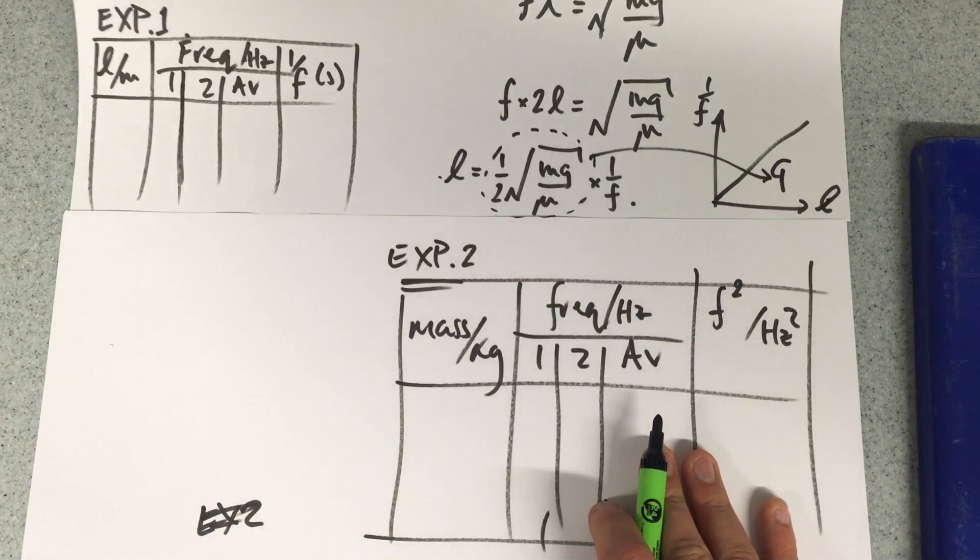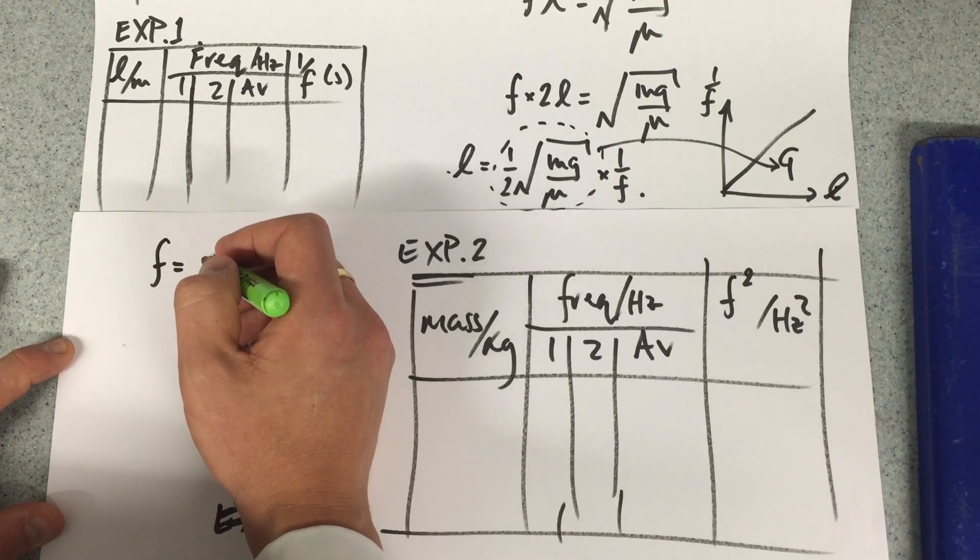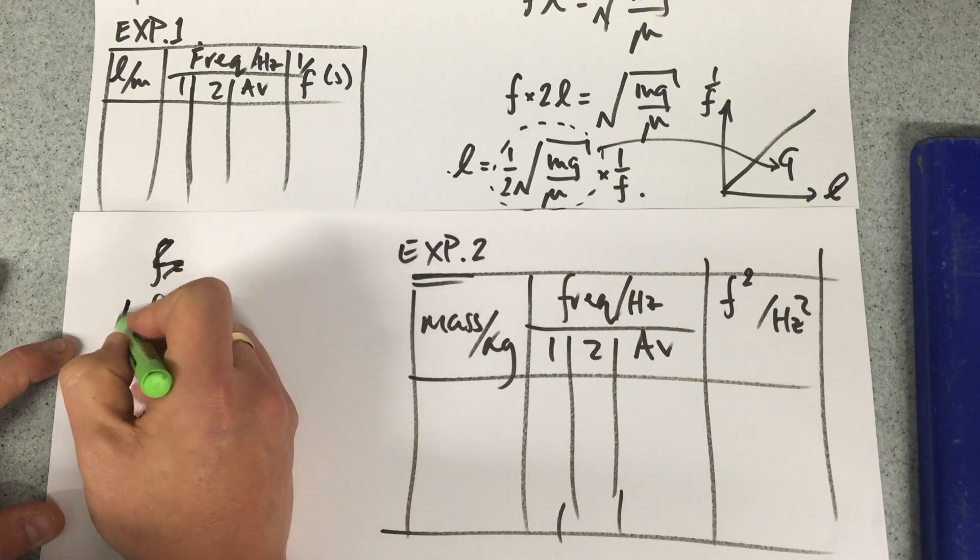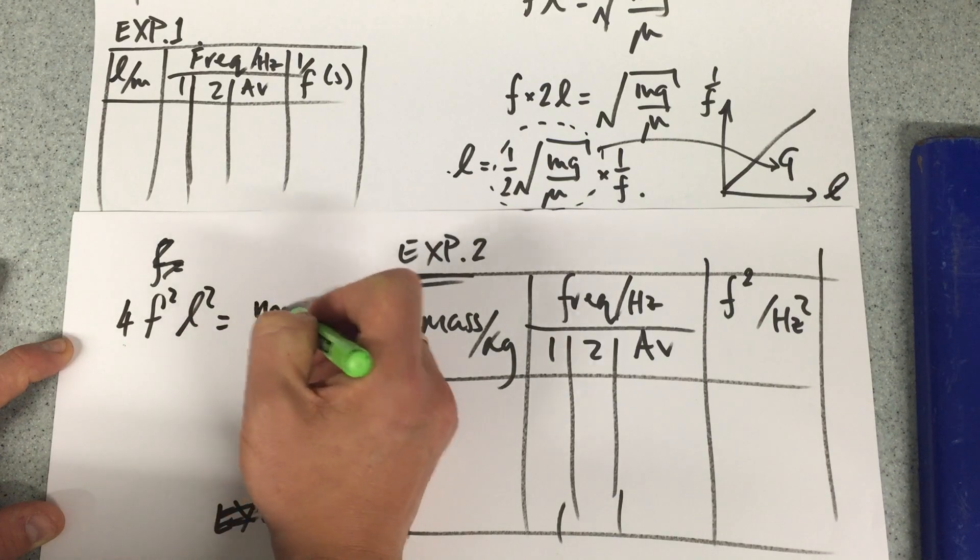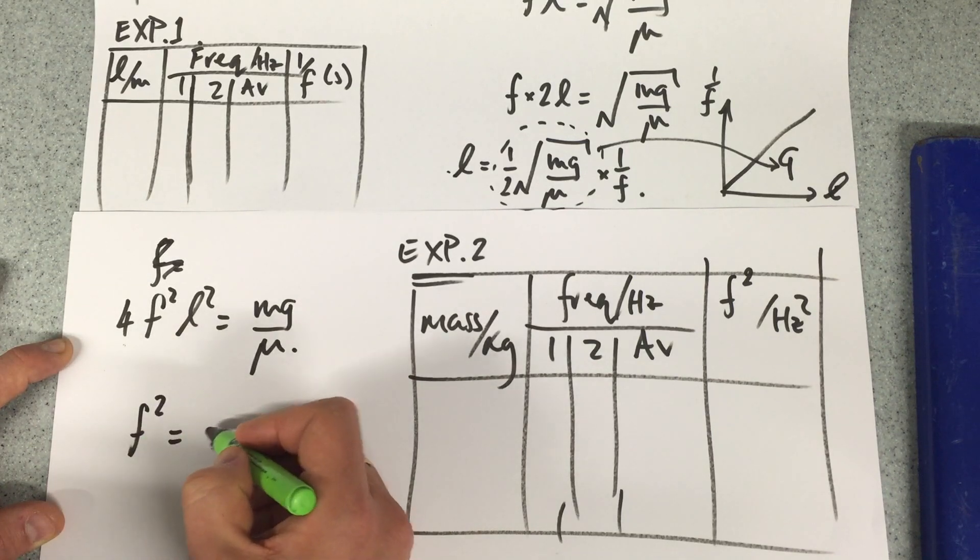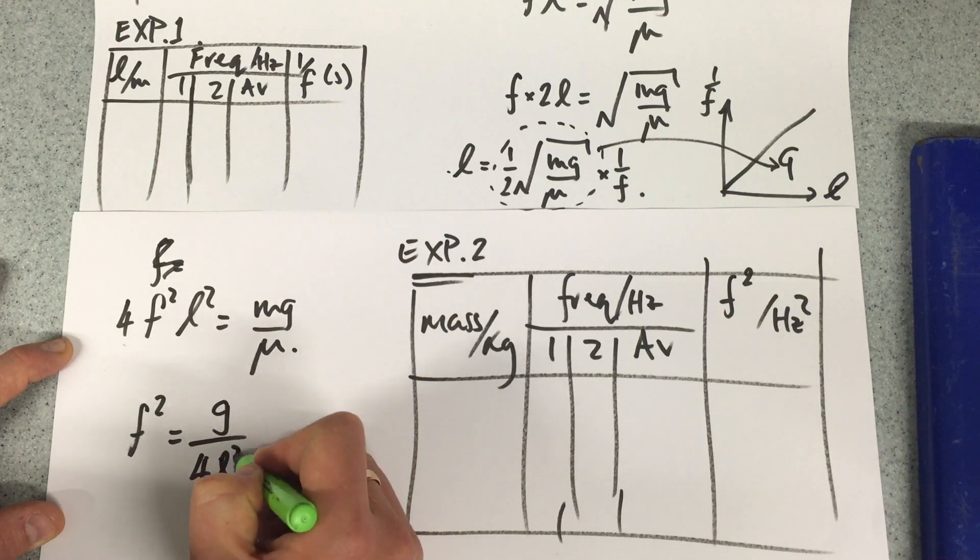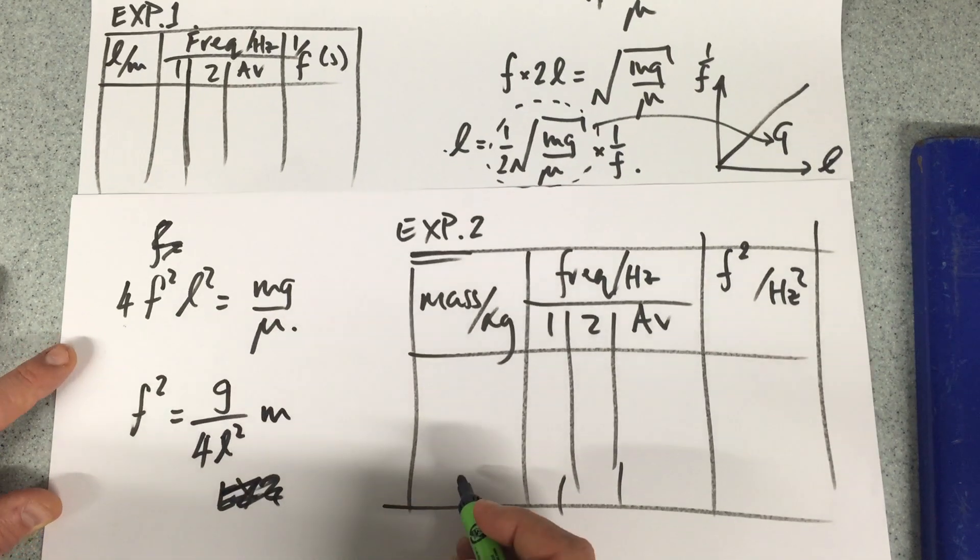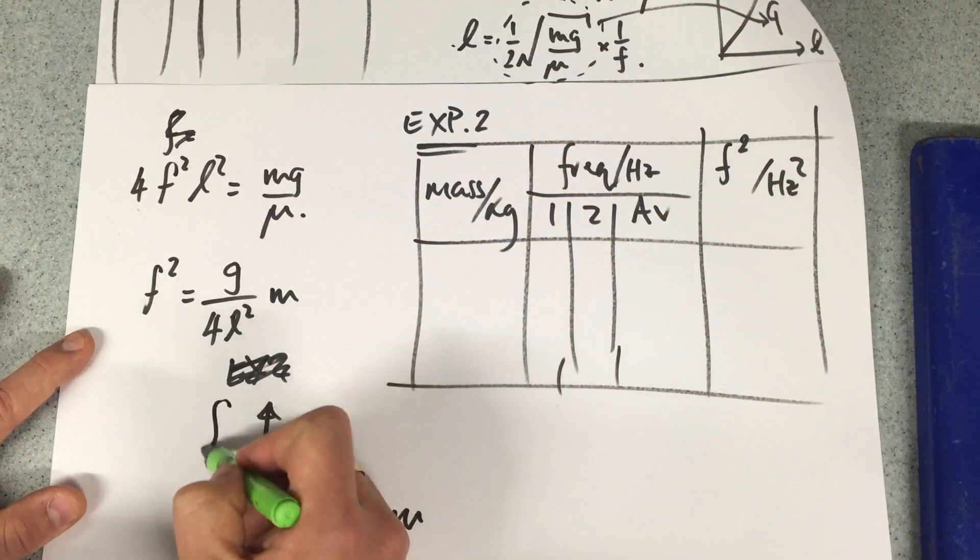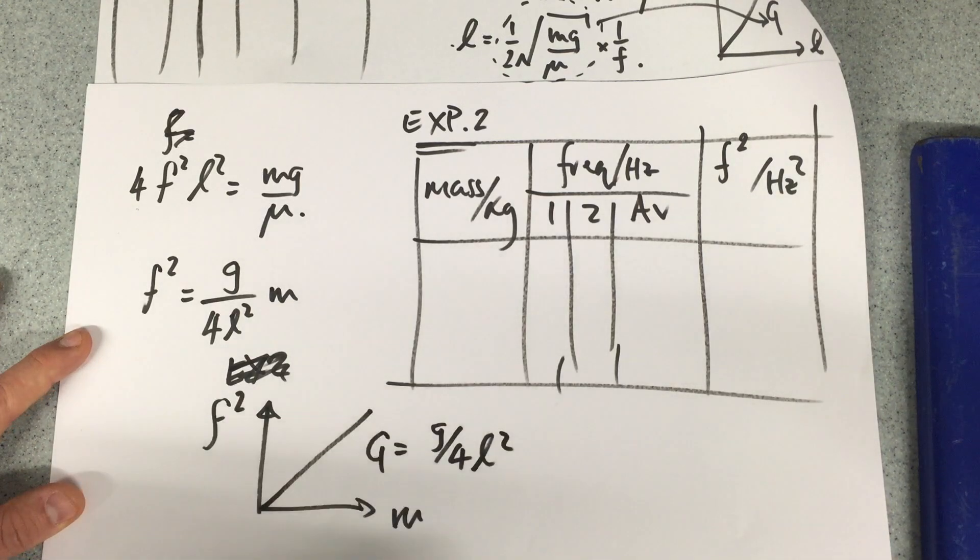With this second experiment, let's square this entire function. 4f² L² gives me mg over μ. I'm changing my mass, so f² is equal to, bringing down the 4 and the L², g over 4L² by m. So if I were to plot changing mass versus f², I'd get a straight line where my gradient is g over 4L². So there's the theory.